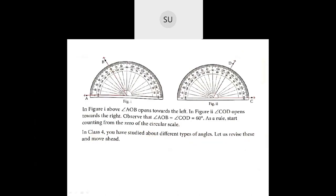In figure 1, angle AOB opens towards the left and angle COD opens towards the right. Both angles AOB and COD are equal to 60 degrees. As a rule, you always start counting from 0 on the circular scale. The baseline is kept on arm OA, coinciding with vertex O. Since it opens towards the left, you use the scale from left to right — 0 is on the outer scale, giving 60 degrees. For angle COD, you read from right to left using the inner scale, and OD points to 60 degrees, so it is also 60 degrees.